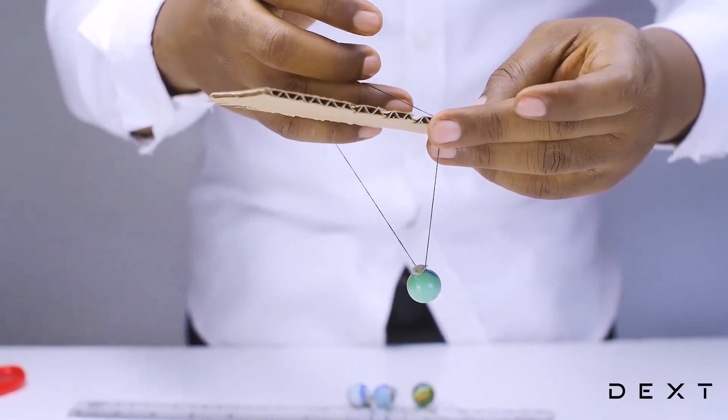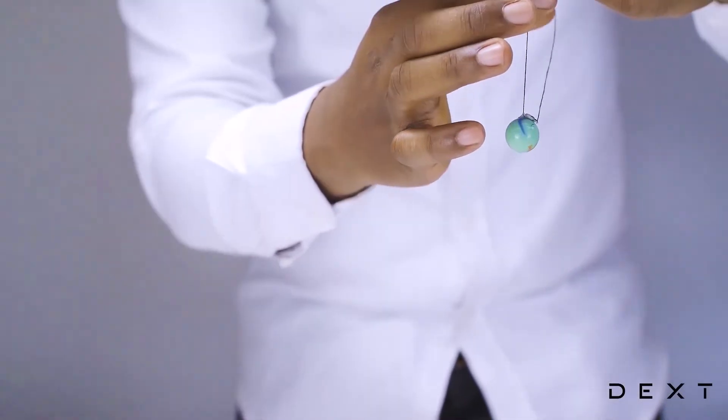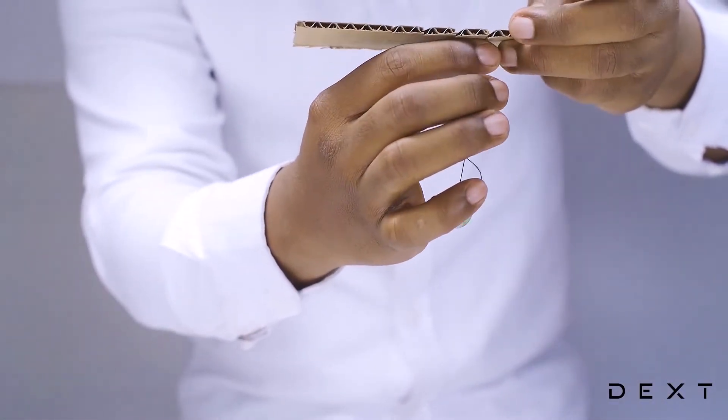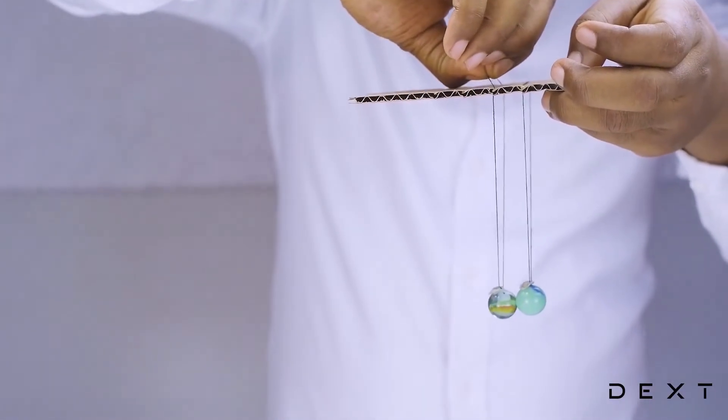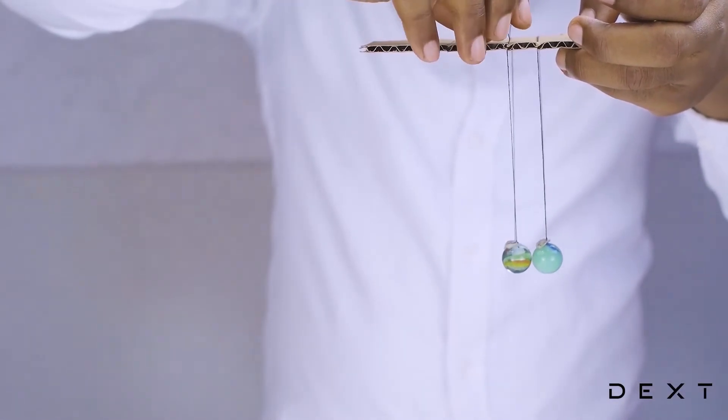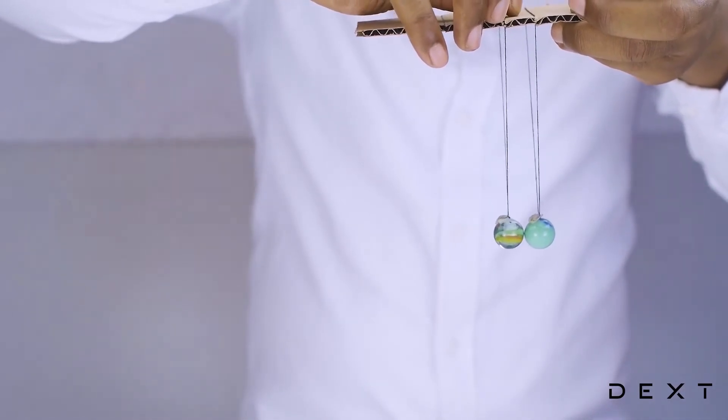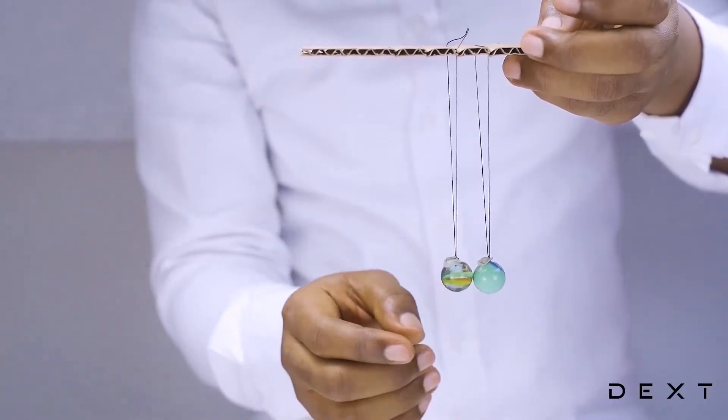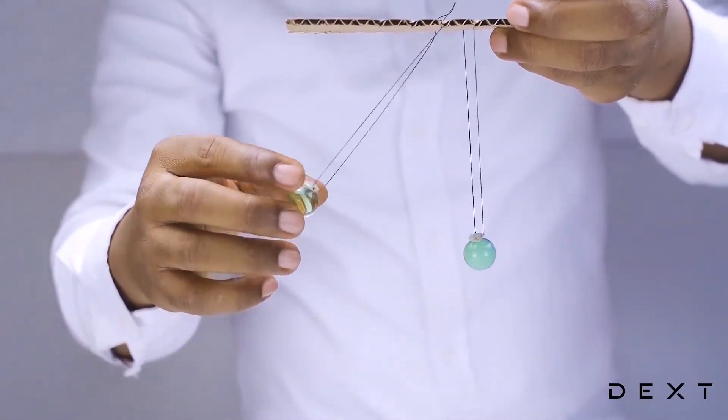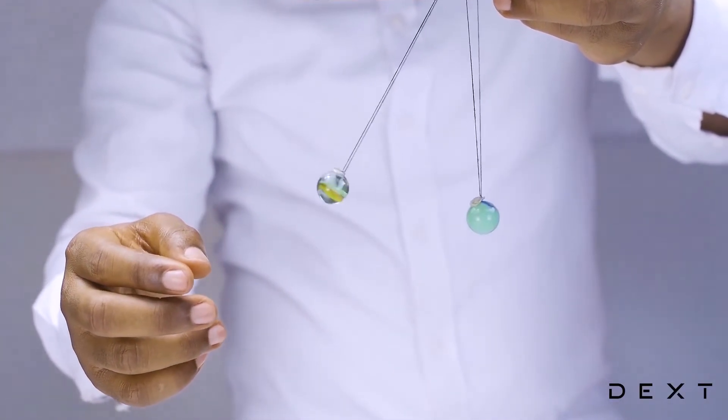So, remember the slits that we cut in the corrugated cardboard? Each slit will have its own string and marble. Once you've placed the marble, you can adjust its height and position by moving the string up. Once they are in line, you can do this.